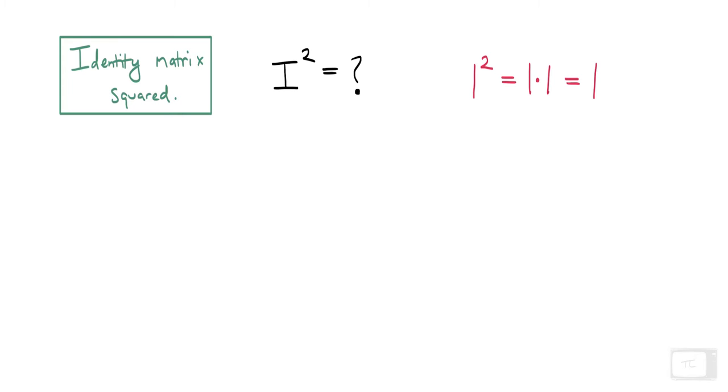Okay, so how can we think about this in the case of the identity matrix? So the identity matrix squared is going to equal the identity times the identity. And we know that multiplying any matrix, doesn't matter if it's the identity or any other matrix, by the identity, leaves that other matrix unchanged. So it will equal I.